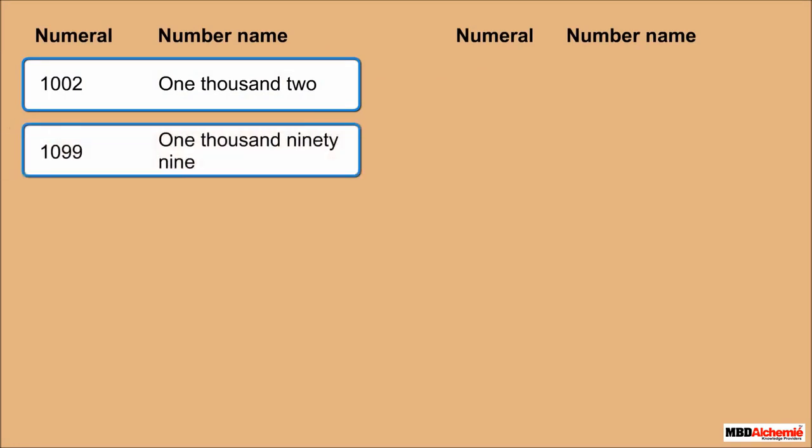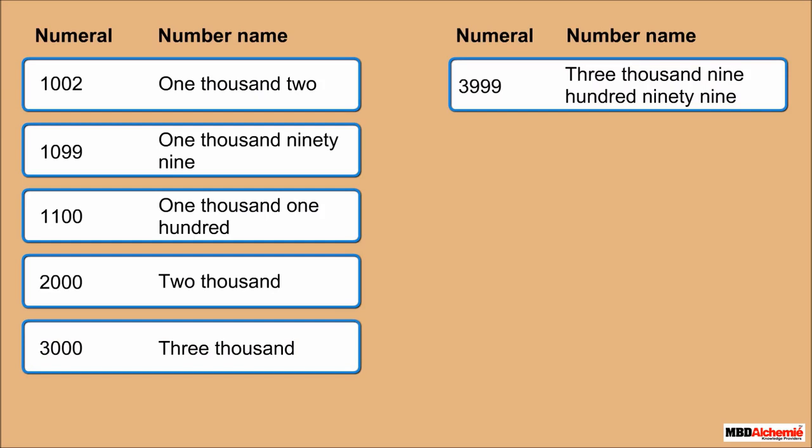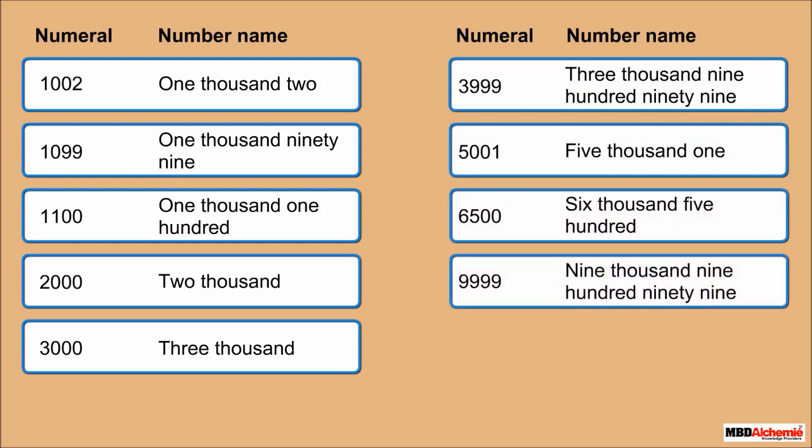One thousand two, one thousand ninety-nine, one thousand one hundred, two thousand, three thousand, three thousand nine hundred ninety-nine, five thousand one, six thousand five hundred, nine thousand nine hundred ninety-nine. So the largest four-digit number is nine thousand nine hundred ninety-nine.